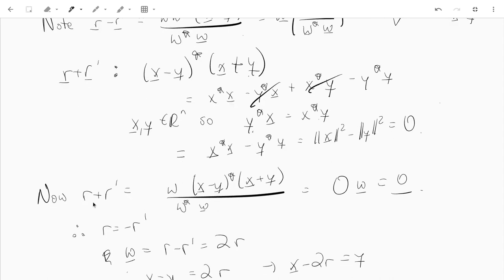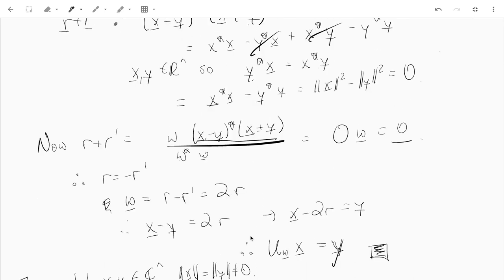Now if we compute r plus r prime, it's just w, w star times x plus y divided by w star w. But we've already seen that this is zero. So the result is you get zero times w, which is just the zero vector. So that tells you that r equals negative r prime.